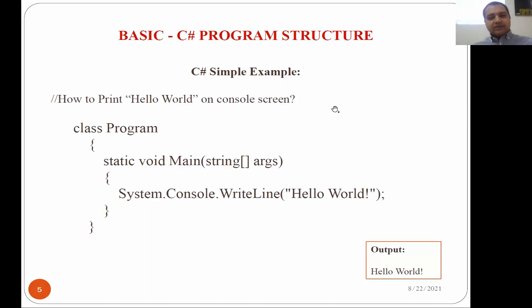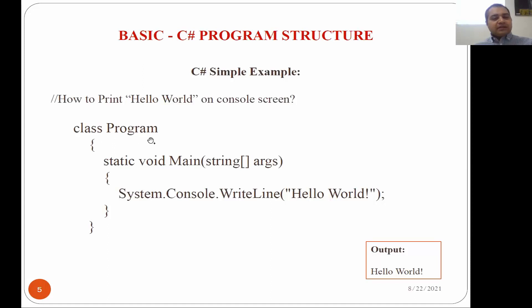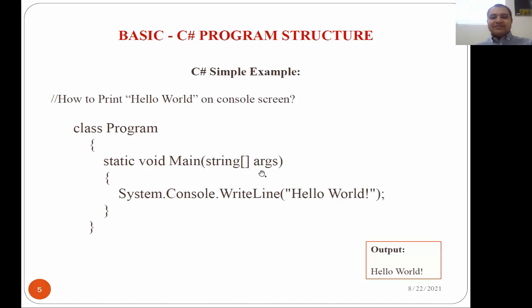Now we can see the basic program structure of C#. This is a simple program to print Hello World. In C#, we cannot design a program without a class — unlike C++, where you can. So first we need to declare a class. Inside the program class we have a main method, using keywords static and void, with string args as the argument array.